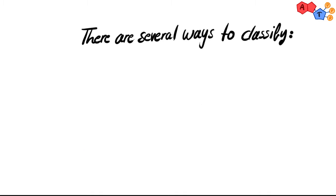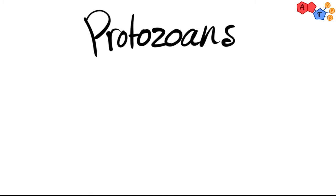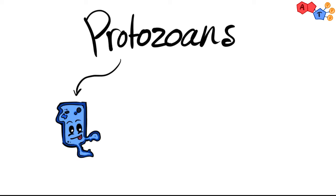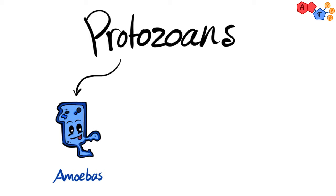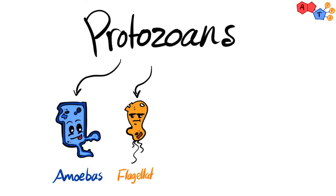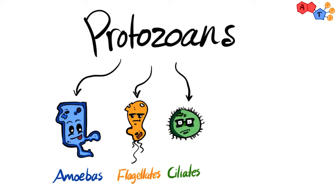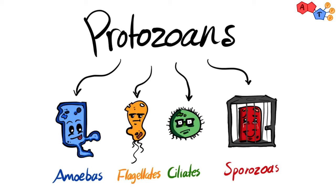There are several ways to classify protozoa — either by their site of infection or by their type of movement. The major classification is according to movement, dividing them into four categories: amoebas, which move with pseudopods or cytoplasmic projections; flagellates, which have two or more flagella; ciliates, which have cilia; and sporozoa, which are non-motile.